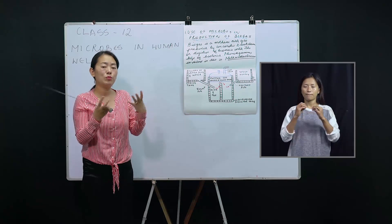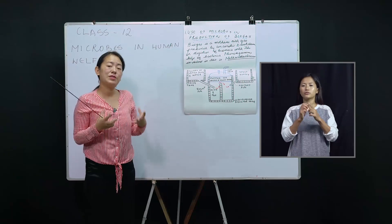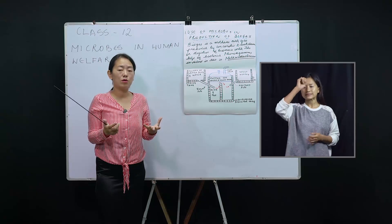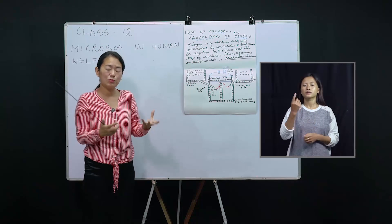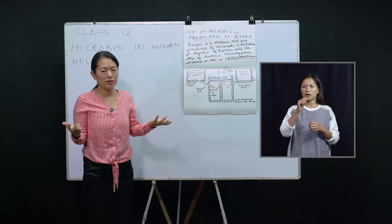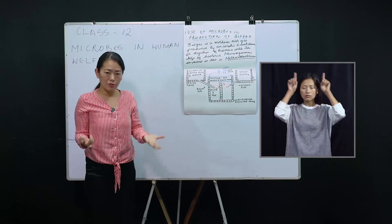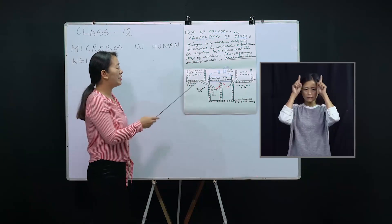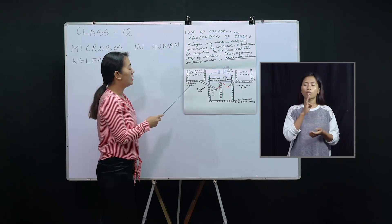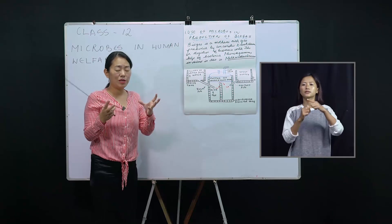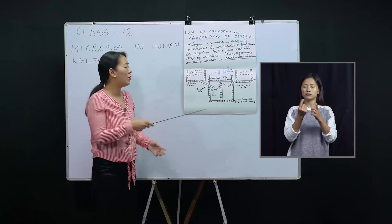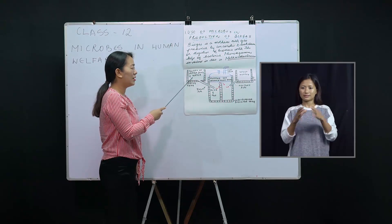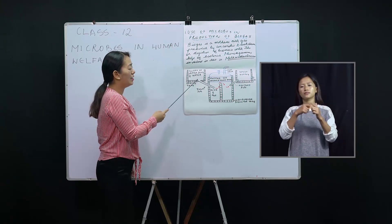To produce biogas, you need a specific structure. This structure was first introduced in India, where Indian scientists made this gas with the help of cow dung. Because there are large numbers of cows in India, they took cow dung and mixed it with water in one tank — that tank is called the mixing tank. After mixing, it formed a slurry, called the slurry of cattle dung and water.